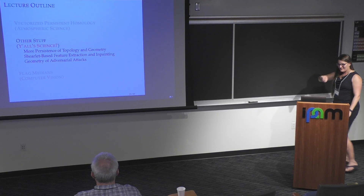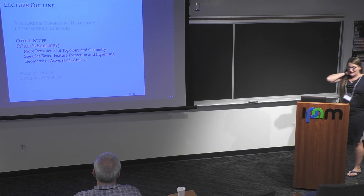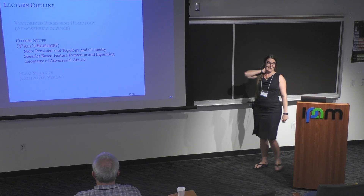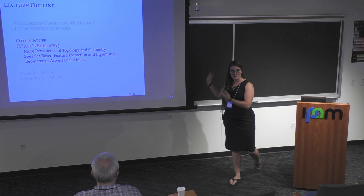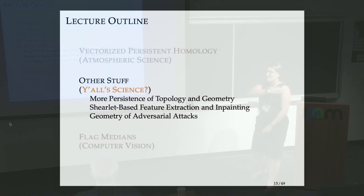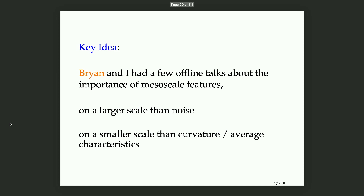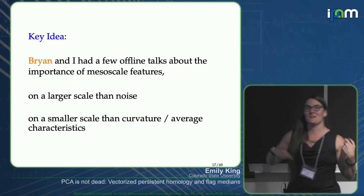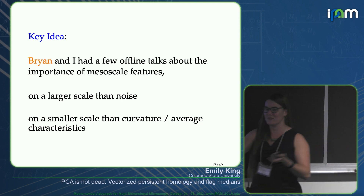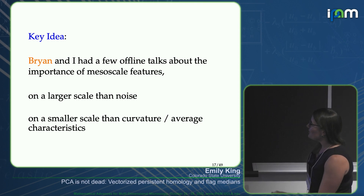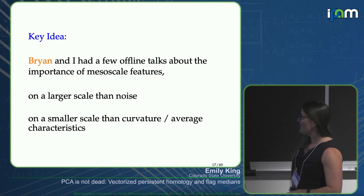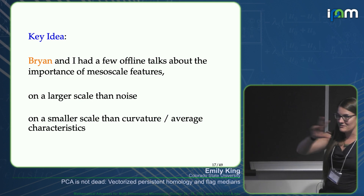With the remaining time, here are additional slides added mainly last night based on discussions and talks from the past two and a half days. A quick comment on mesoscale and persistence: mesoscale features can be thought of as bars that are really long in the persistent barcode — something on a larger scale than noise but smaller than global curvature or average characteristics.